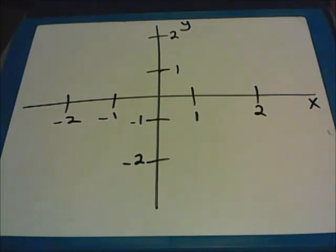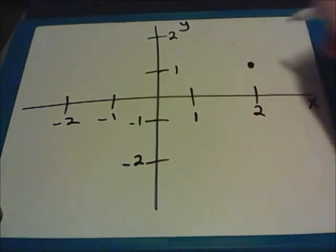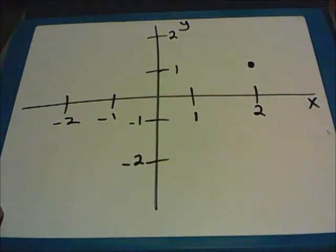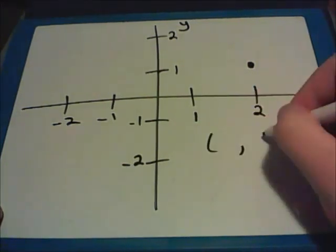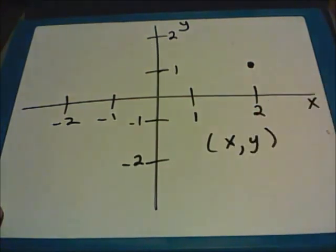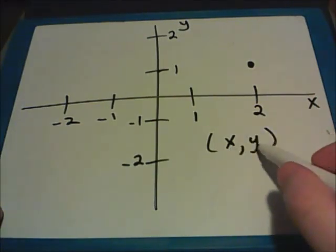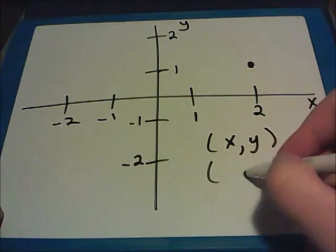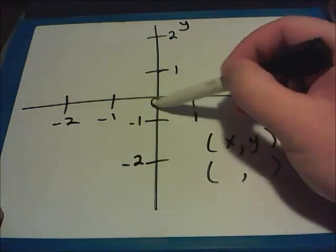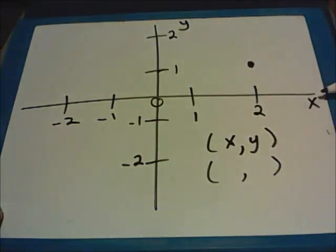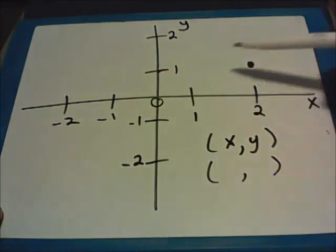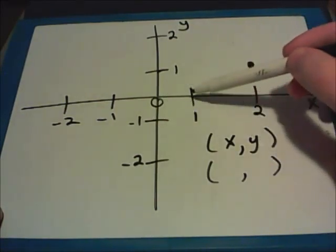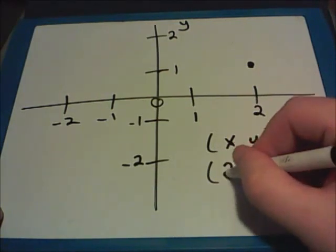One of the questions you may be asked to answer is where is a point located within the coordinate plane? So let's say I have a point bubbled in right here. To find this point, we have to use what are called coordinate pairs. They're a set of numbers separated by a comma within parentheses. The first number always refers to the X line and the second number always refers to the Y line — X always comes before Y. Starting at zero, we move over two places to the right, so the X value is two.